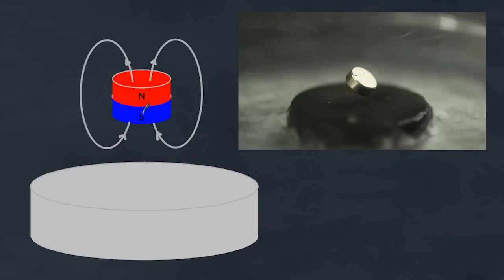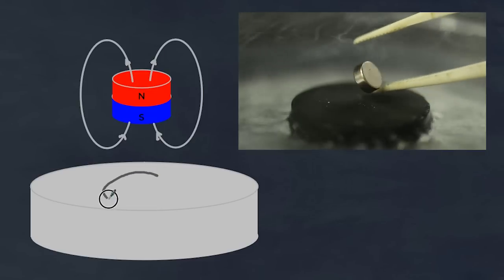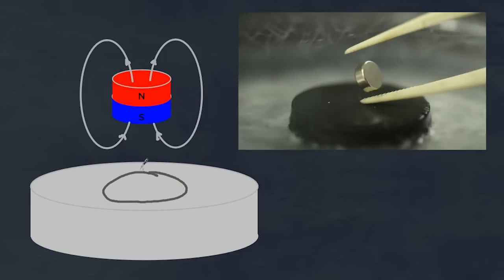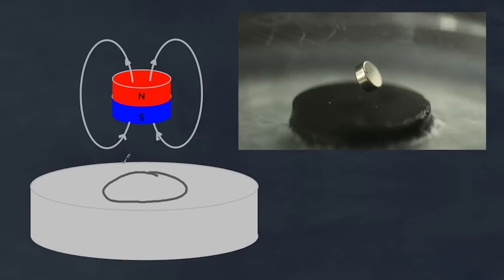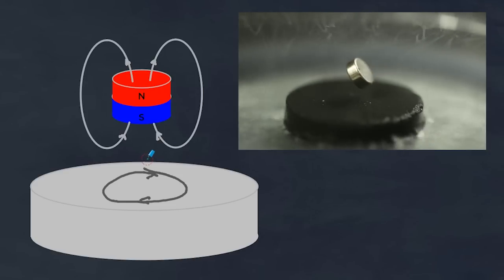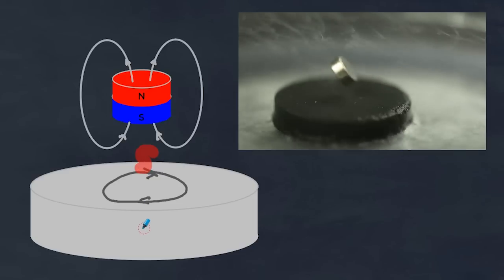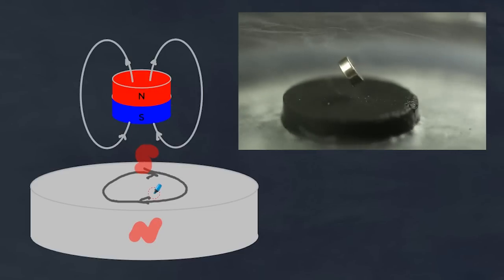Now the direction of that is determined by Lenz's law. So if the south pole is coming down towards it then that will generate a current that is in this direction. And using your right hand grip rule, that means if a current is going in this direction, then you're going to produce a south pole over here and a north pole over here, and that of course opposes the one that generates it and therefore it levitates.